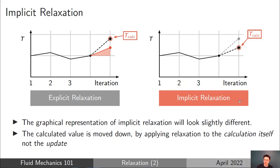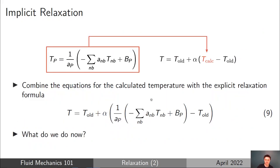You'll notice we end up in the same place if we use the same relaxation factor — that's the idea. But the benefit of implicit relaxation is that if the matrix equation itself is unstable, we're able to stabilize it. Going back to the maths: we have our formula for T calc, and we substitute the explicit relaxation formula in for T calc, arriving at equation 9.